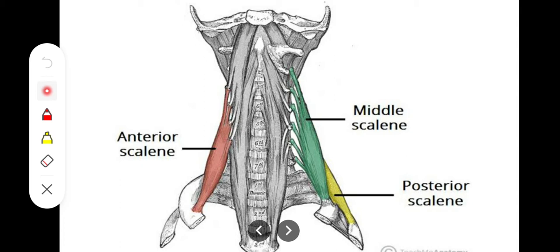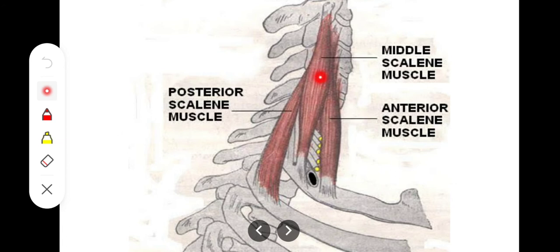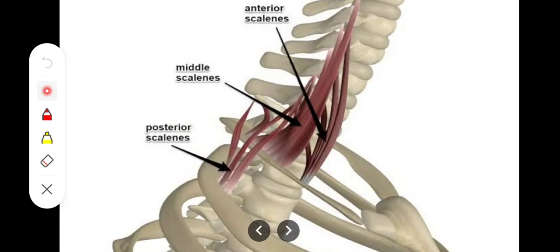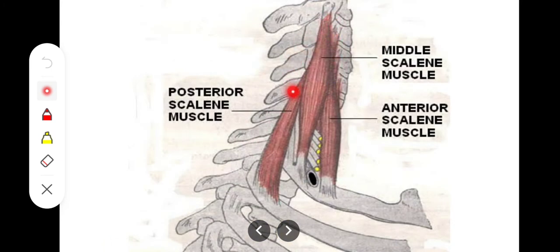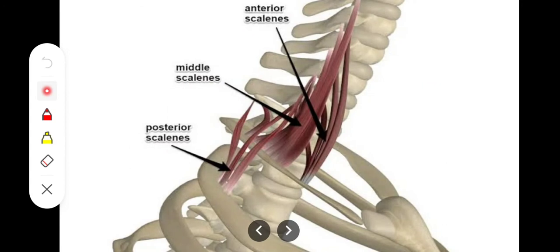Now we have seen each attachment, so the orientation is like scalenus medius, scalenus anterior, and scalenus posterior muscles. I just want to give you an idea about their orientation and how they are attached. They originate from the cervical vertebrae transverse processes and their attachment is on the first and second rib. So this is scalenus medius, scalenus anterior, and scalenus posterior — they are separate muscles.